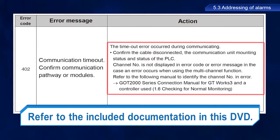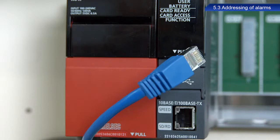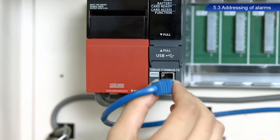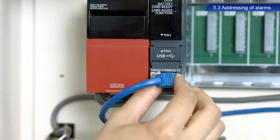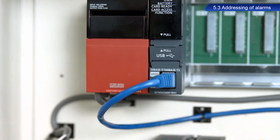As you can see, possible troubleshooting for the 402 error code is cable disconnected. So let's check the cable connecting the GOT and PLC. The cable was not connected correctly, which triggered the alarm. Reconnect the cable correctly. The cause of the error has been resolved.